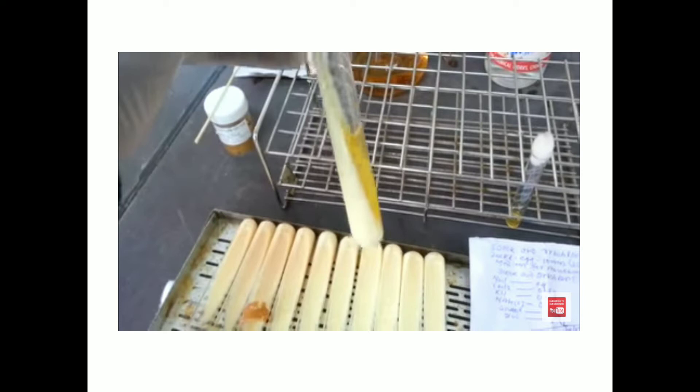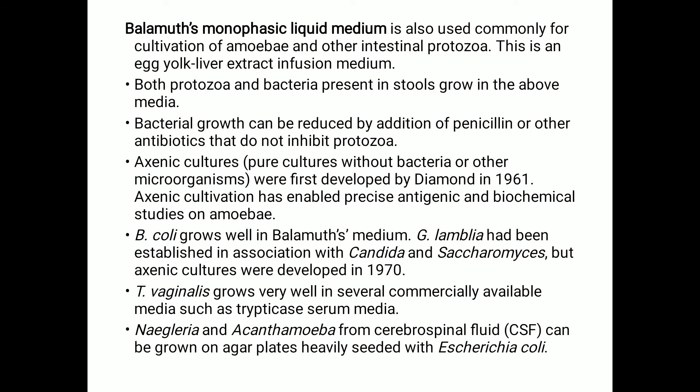Another medium to discuss is the Balamuth monophasic liquid medium. This is commonly used for the cultivation of amoeba and other intestinal protozoa. It is an egg yolk liver extract infusion medium. The composition contains liver concentrate powder, egg yolk, phosphate buffer, dibasic potassium phosphate, monobasic potassium phosphate, and distilled water.